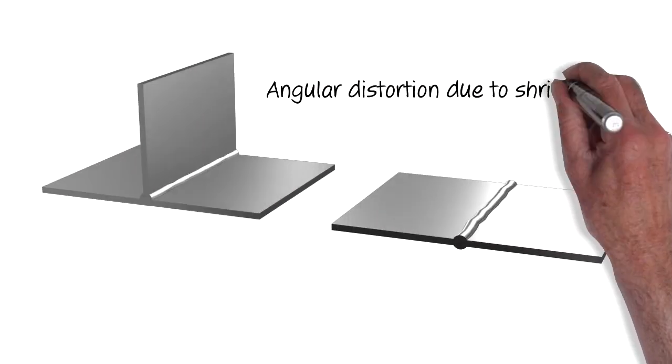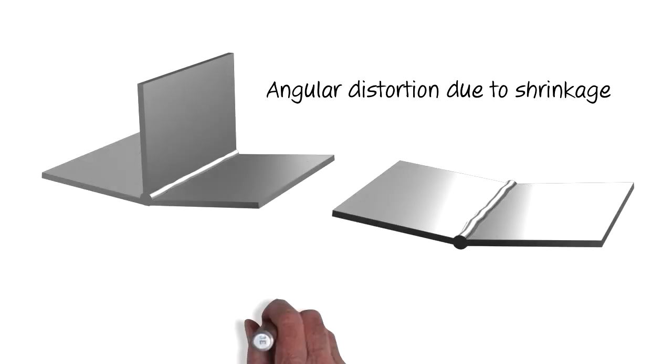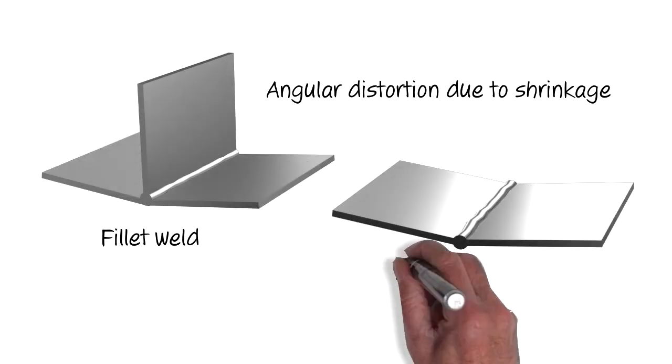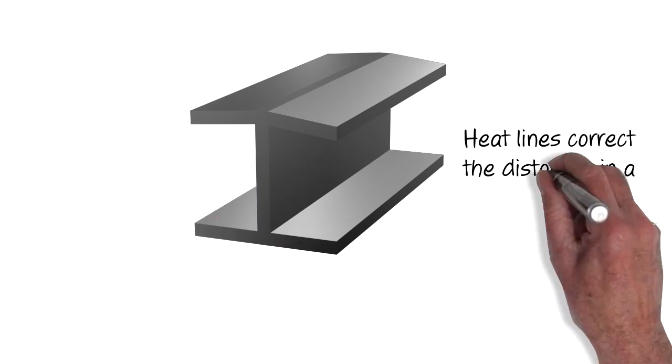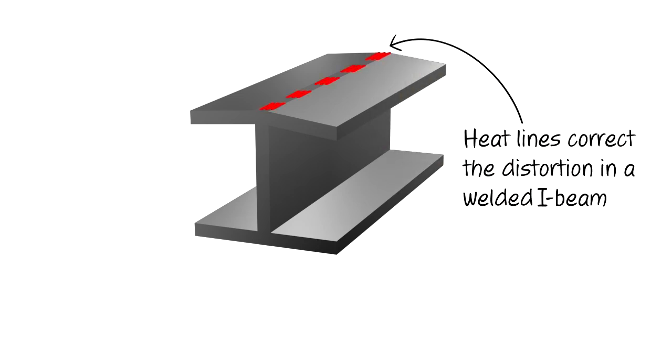Angular distortion often occurs due to shrinkage following the welding of a fillet or butt weld. This diagram shows an I-beam where distortion has occurred on one of the flanges. By placing appropriate heat lines on the top flange, this distortion can be rectified.